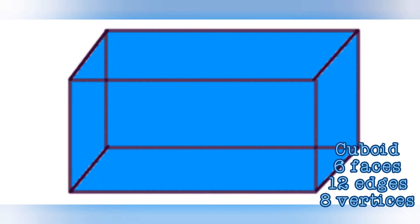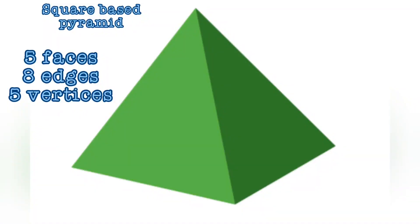This is a cuboid. It has 6 faces, 12 edges, and 8 vertices too. This is a square base pyramid. It has 5 faces, 8 edges, and 5 vertices.